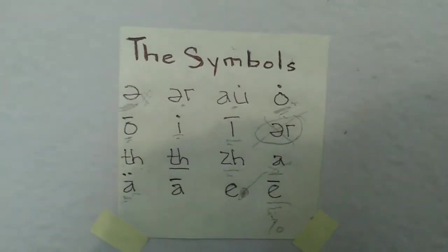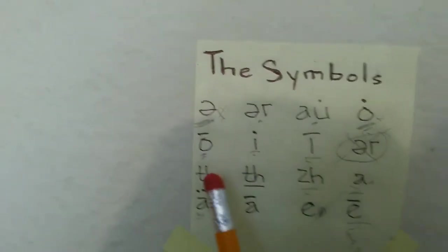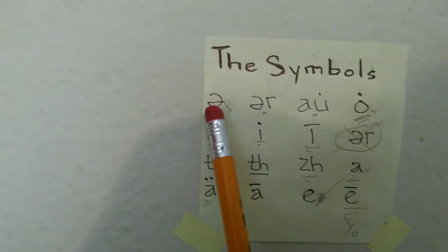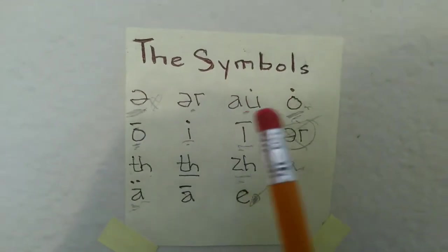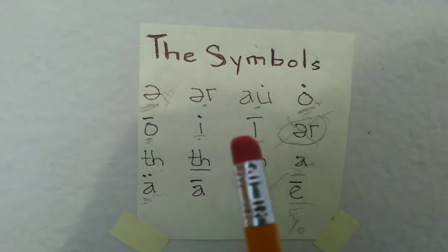...has a very specific sound. For example, this one is 'uh', that one is 'er', 'al', 'o', 'e', 'i'.